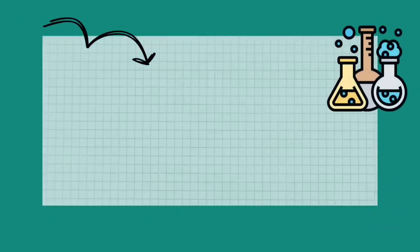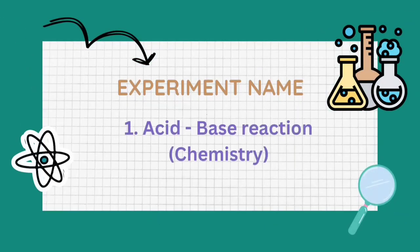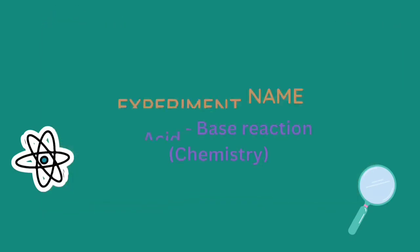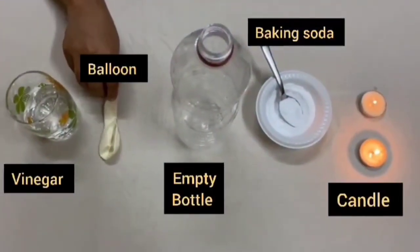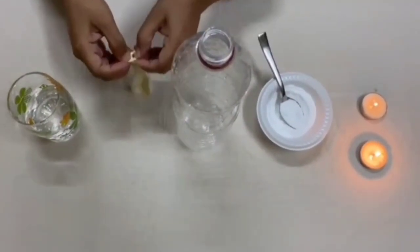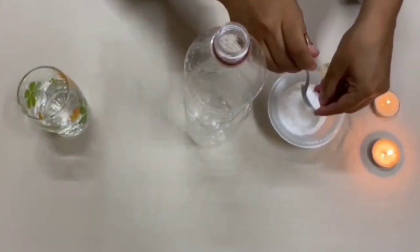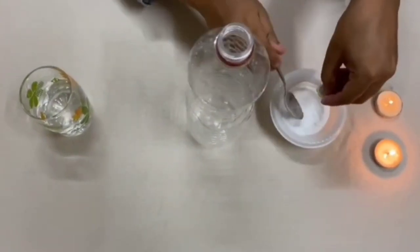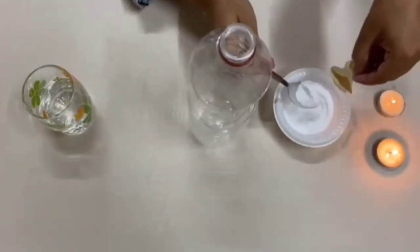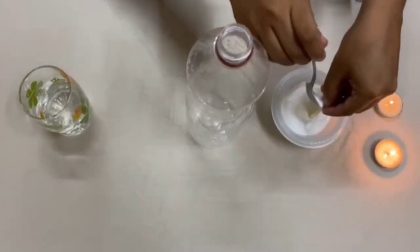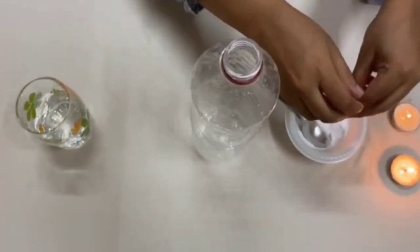We will start off the first experiment which is a basic acid-base reaction. These are the ingredients required for the reaction. We will start off the experiment by adding baking soda in the balloon and filling the empty bottle with vinegar.